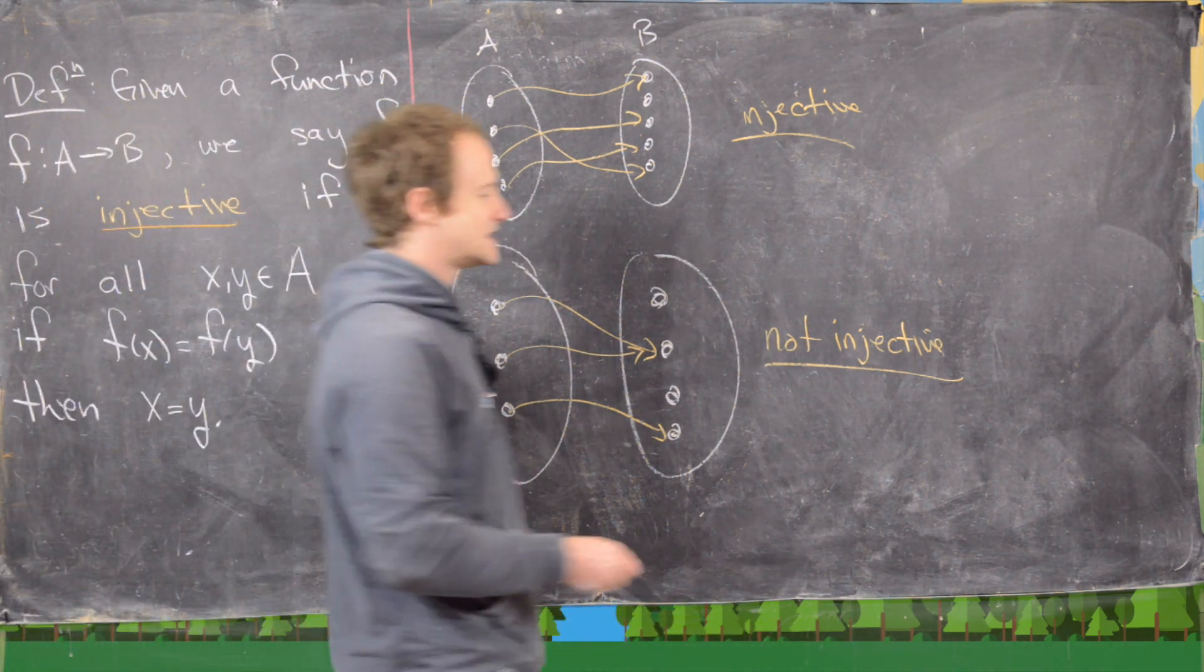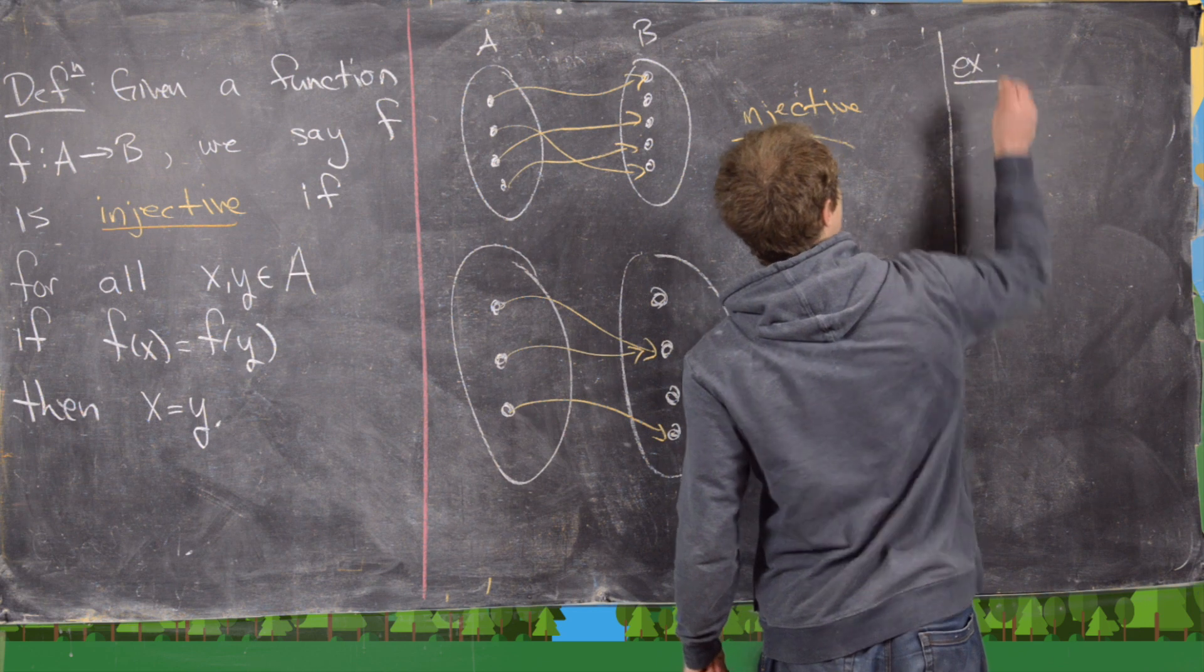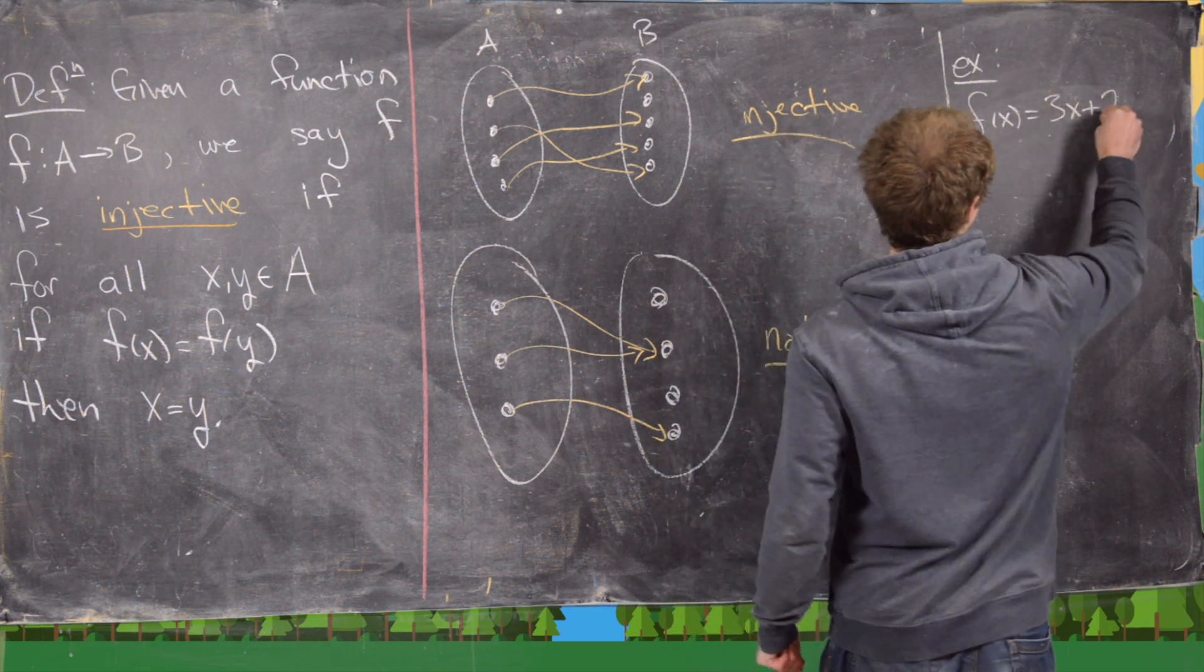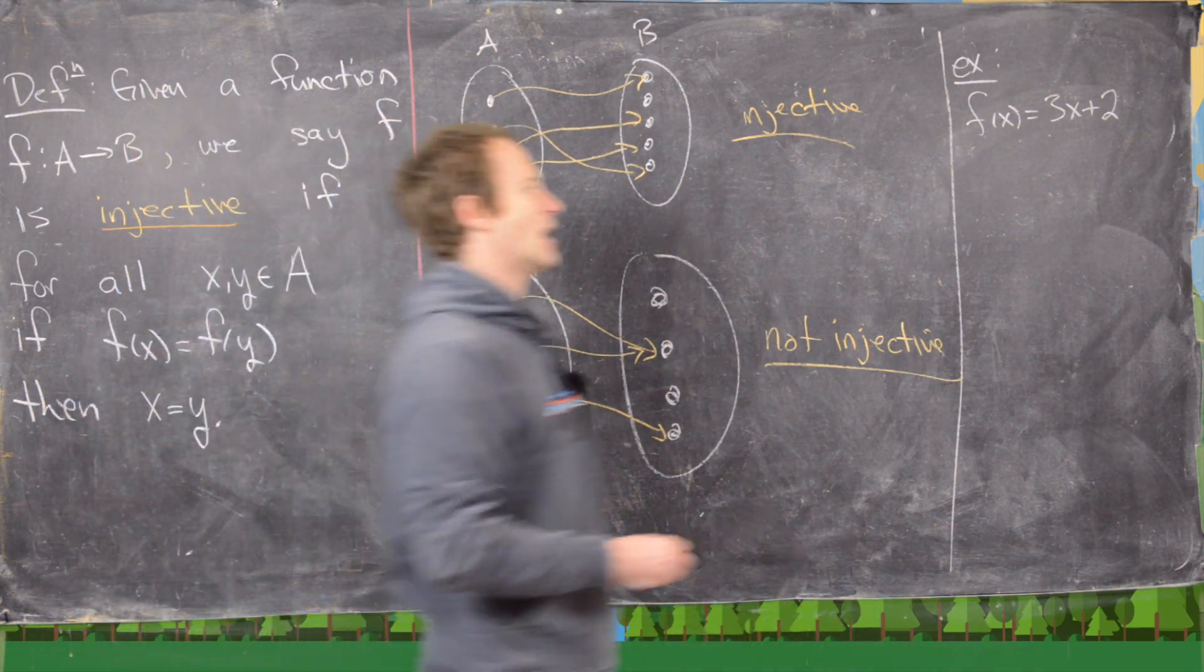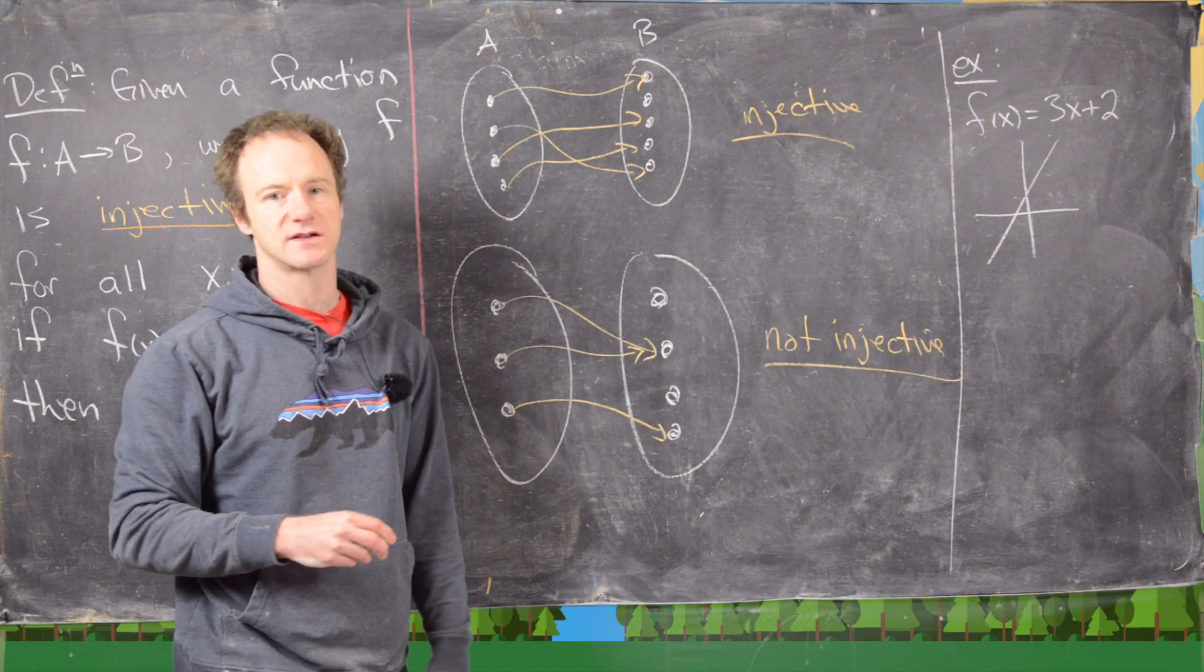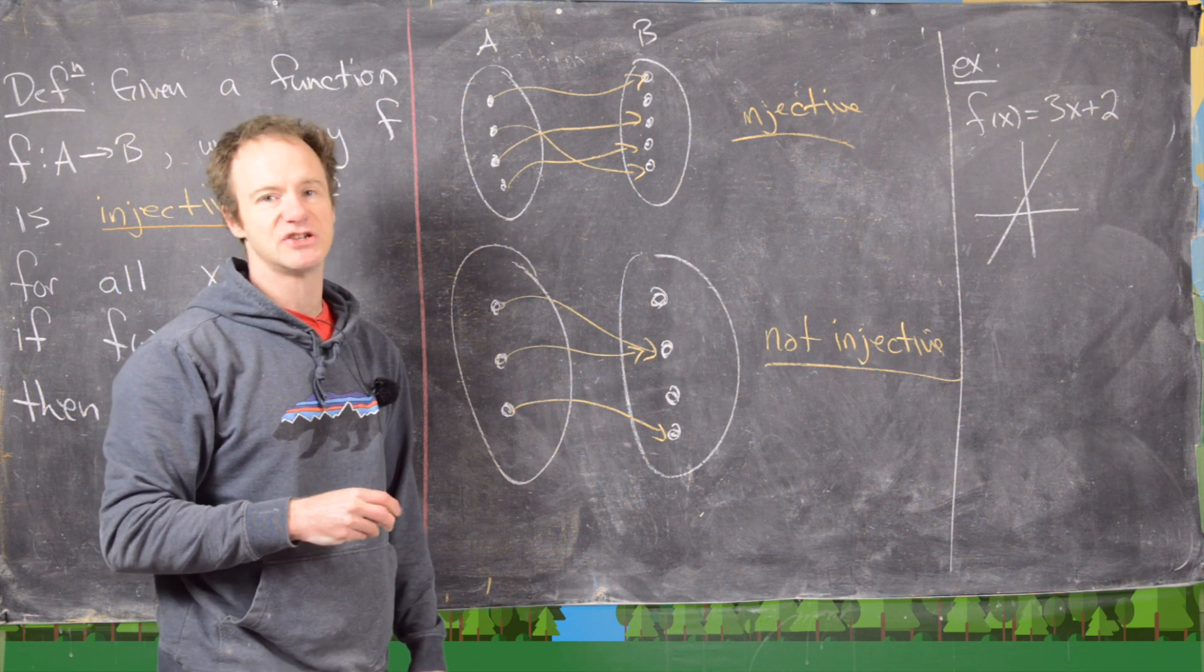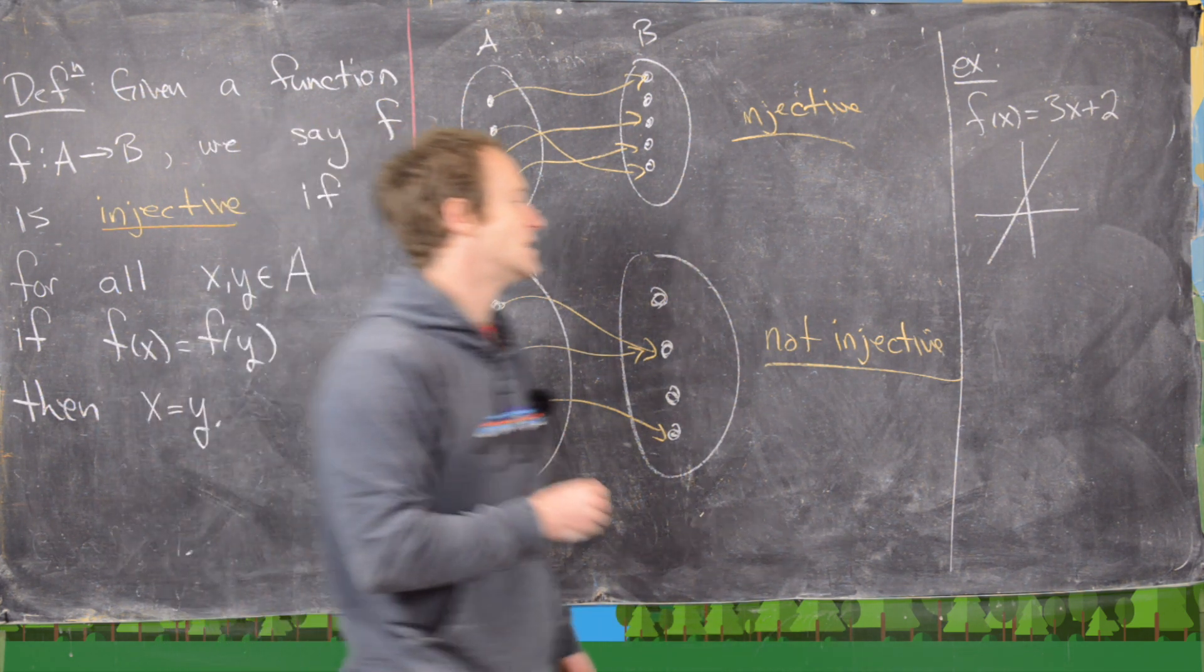So now, let's look at some examples that you will have seen in calculus class. So an example of an injective function would be f of x equals 3x plus 2. Notice that we could graph it, looks like that, and that passes the horizontal line test. And in fact, if you know the graph of a function, it's going to be injective or one-to-one if and only if it passes the horizontal line test.